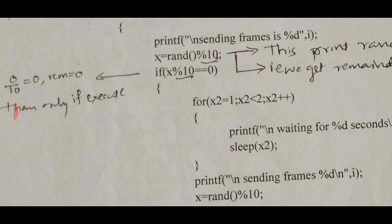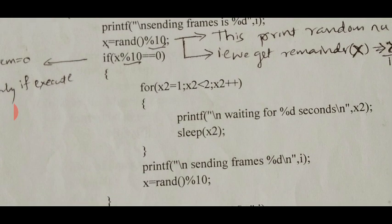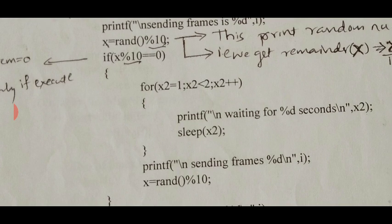For the retransmission loop, x2 is defined as 1, and the loop runs while x2 is less than 2. It prints 'Waiting for 1 second', meaning if no acknowledgement is received, the sender waits for a time interval. Then it sleeps for 1 second and resends frame 1. X is recalculated as rand() % 10. If X is between 1 and 9, acknowledgement is received. If X is 0 again, the same loop executes and the frame is sent once more.